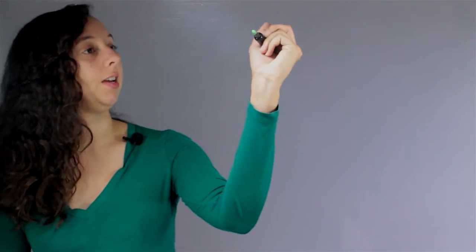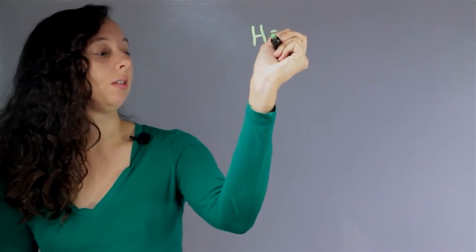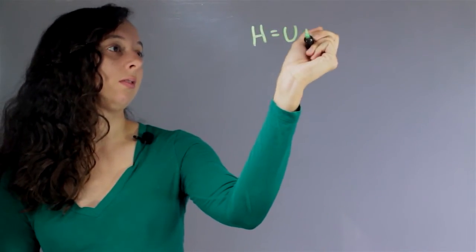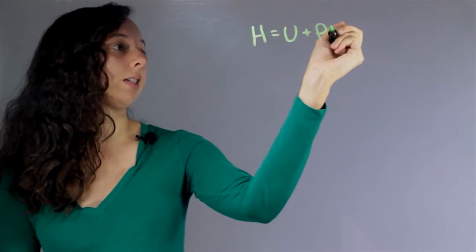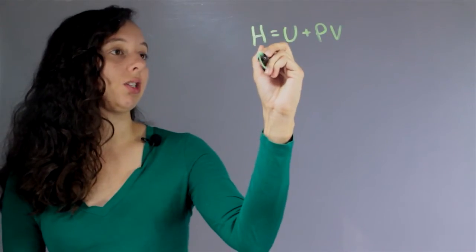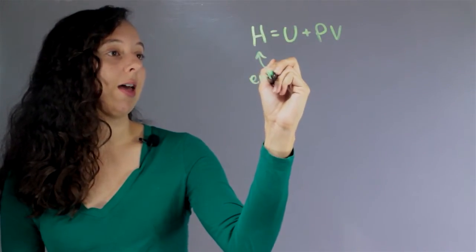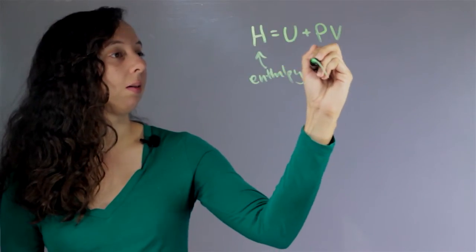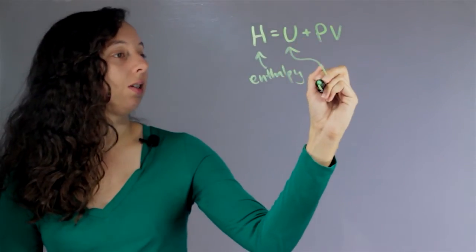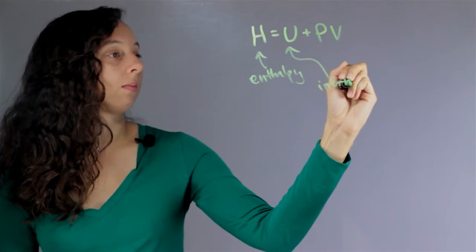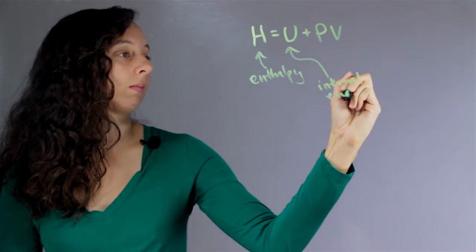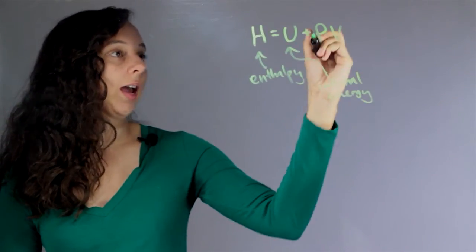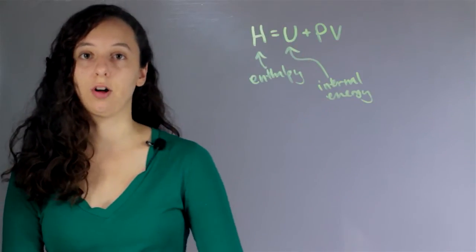The equation we use to represent this is H equals U plus PV. H is how we represent enthalpy in equations. E is already taken up by a bunch of other stuff. U is internal energy, and P and V are just pressure and volume respectively.